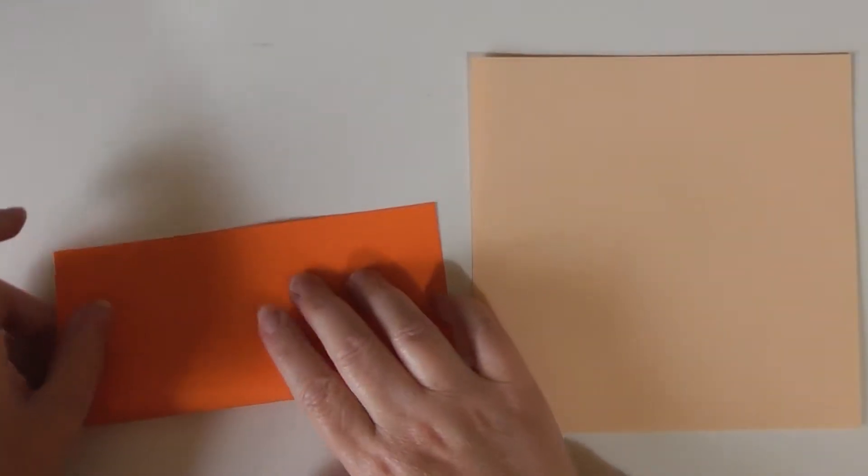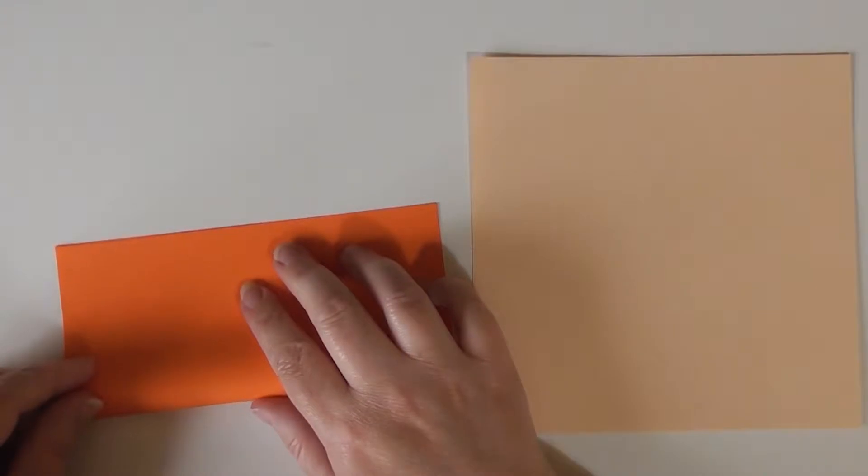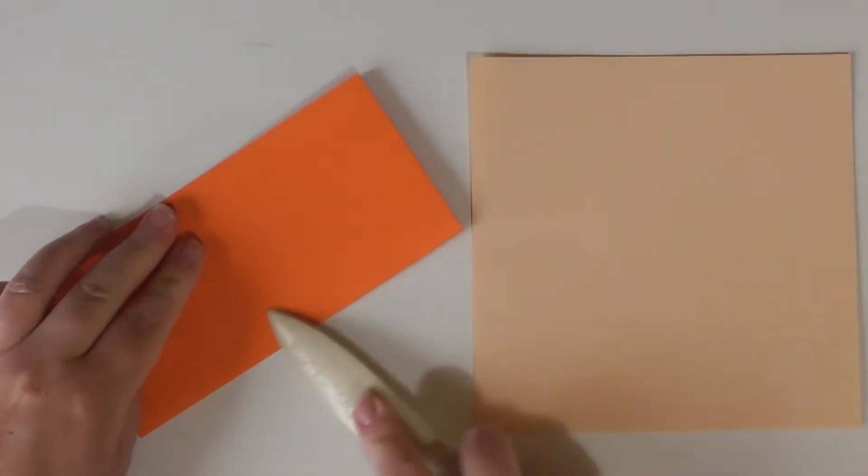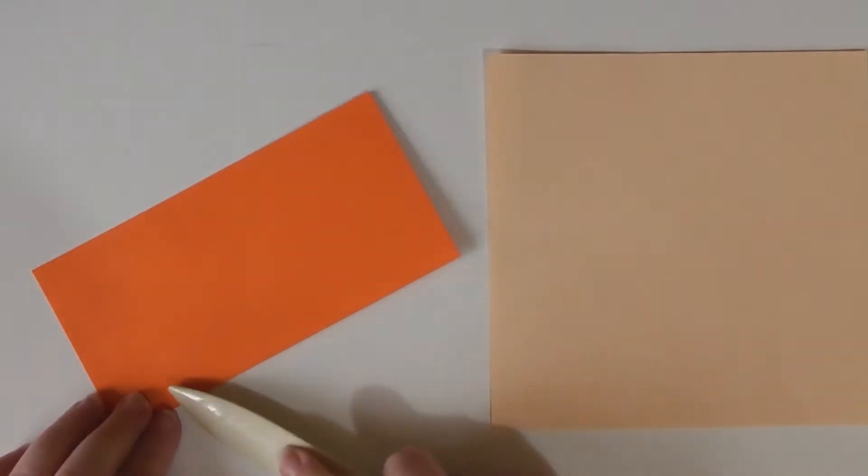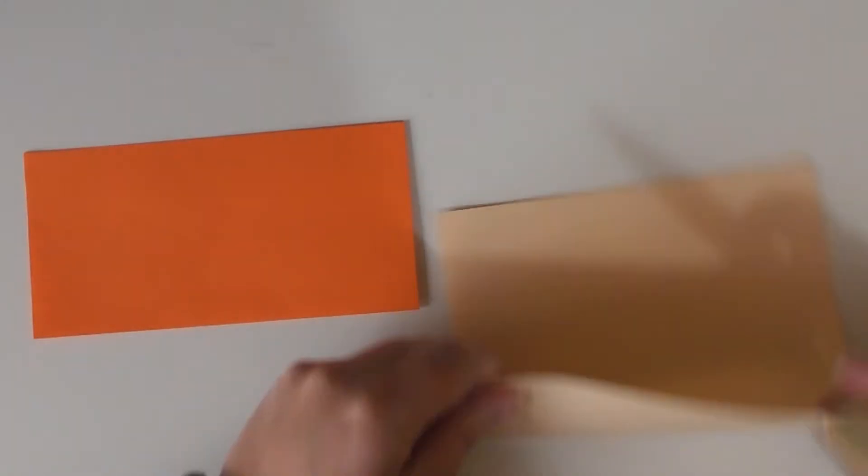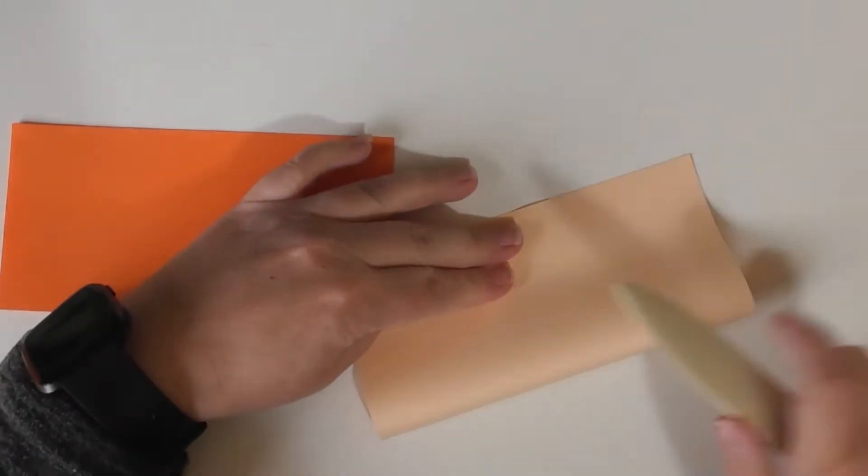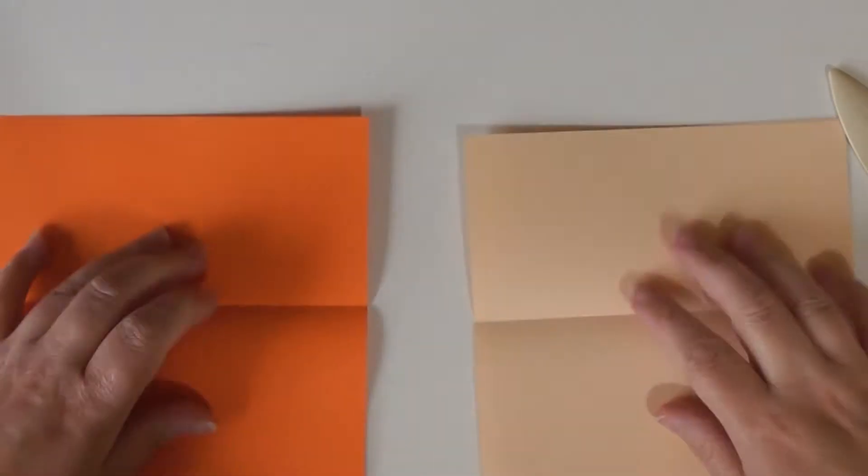So the first thing I'm going to do is just fold the paper in half. And again I'm using my bone folder because I find it gives me sharper edges. So we're just folding this paper in half. And then opening them both back up.